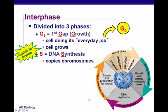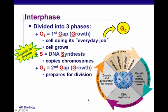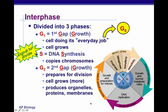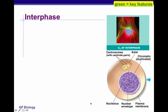The S phase is where we're copying the chromosomes. In G2, the second gap or growth phase, we are preparing for mitosis and cell division. We're going to produce more organelles and more membranes. So again, all of this is happening in interphase.